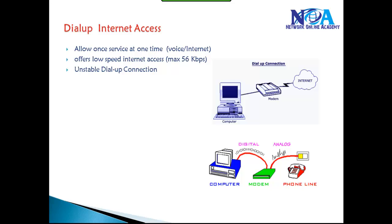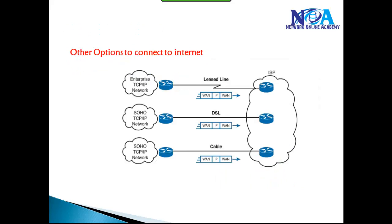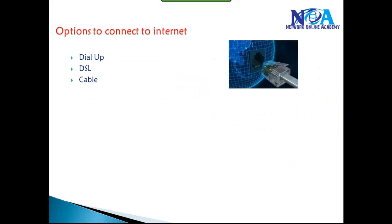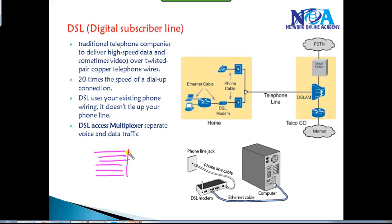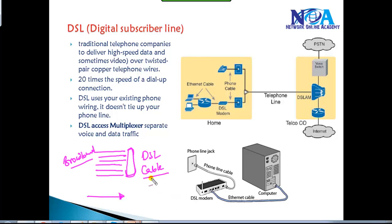Today, most dial-up internet connections have been replaced with broadband technologies that use existing DSL or cable connections. Broadband allows multiple signals to travel on the same cable or wire simultaneously, whereas baseband only carries one signal at a time. DSL modems and cable modems both support broadband technologies, providing much higher data transfer rates compared to dial-up.